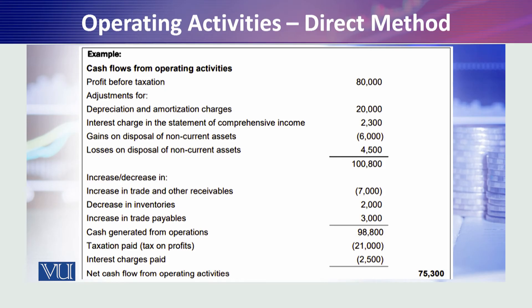In the indirect method example: we start with profit before tax. We add back depreciation. Financial charges that were kept on an accrual basis are added back — because ultimately the cash-based payment of financial charges has to be deducted separately. The standard requires separate disclosure of what cash payment was made for financial charges, to avoid duplication. So the accrual-based expense is added back, and the actual cash interest payment is then separately deducted.